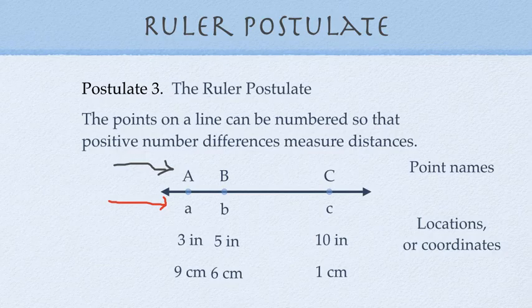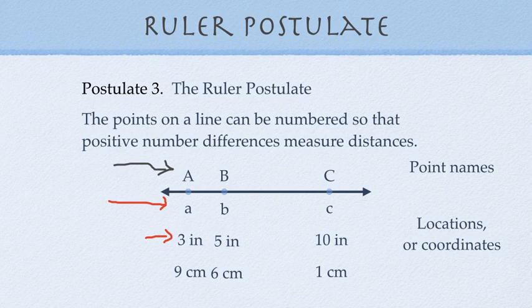Now, I've offered two different sets of coordinates for this just to show you that positive number differences measure distance. So, if point A is at the three-inch mark and point B is at the five-inch mark, then the distance between them is not three take away five. It's five take away three. So, we subtract the larger from the smaller in order to get the distance. And then the distance between point B and point C is from five to ten inches, which would be five inches difference.